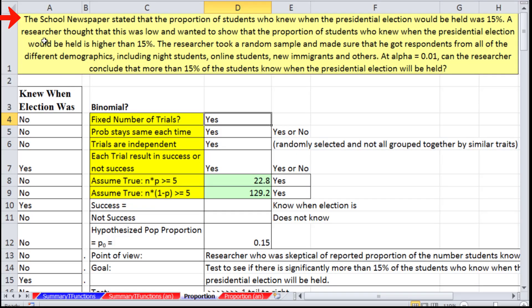Here's our question. The school newspaper stated that the proportion of students who knew when the presidential election would be held was 15%. Our researcher thought this was low and wanted to show that the proportion of students who knew when the presidential election would be held is higher than 15%.